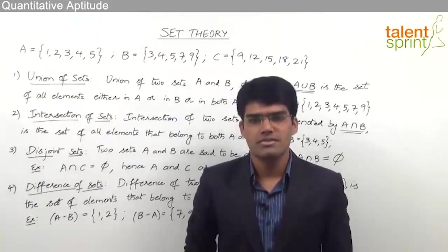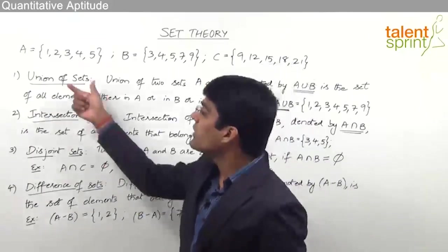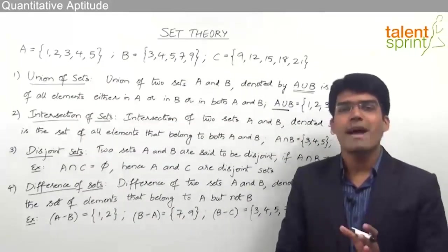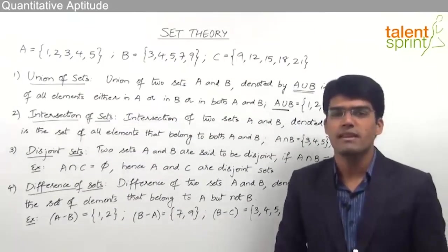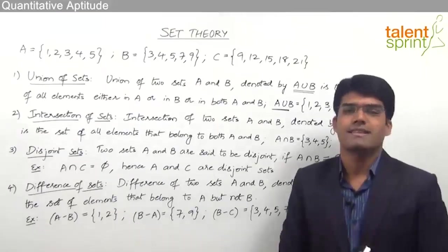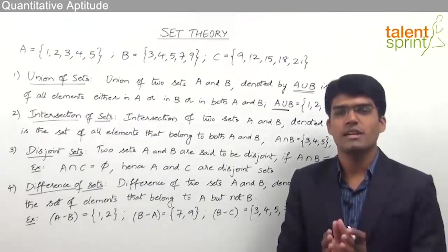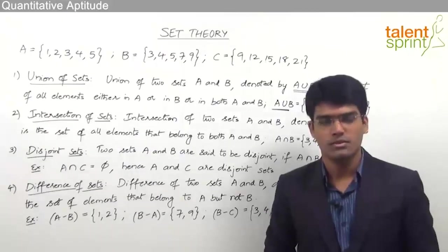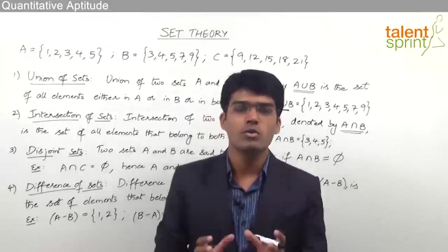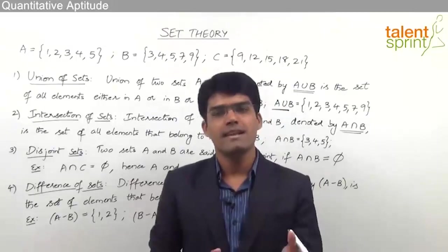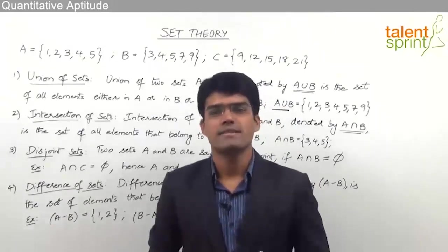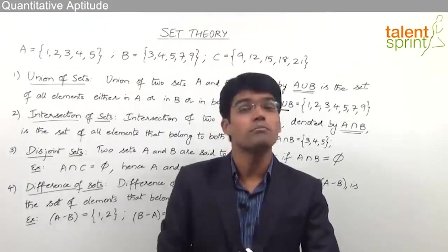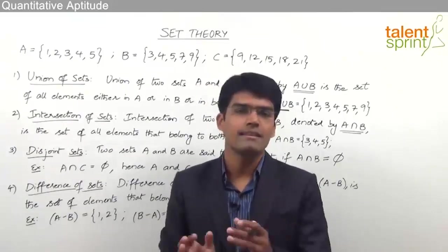Out of all these operations, the most important ones for bank exams are union of sets and intersection of sets, as the questions in bank exams involve either union or intersection. Union of two sets is all those elements in the first set or the second set or both, whereas intersection of two sets is all those elements present in both the first and second set.